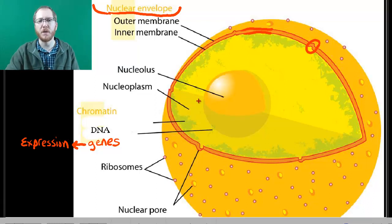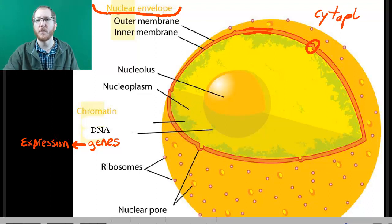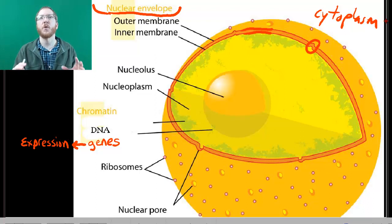Once you get inside, you've got the nucleoplasm, which is going to be very similar to what's outside, which is going to be the cytoplasm, but chemically it is different. So it's similar, but it is not the same. That's one of the reasons we don't include the nucleus as part of the cytoplasm. It's chemically going to be a bit different.